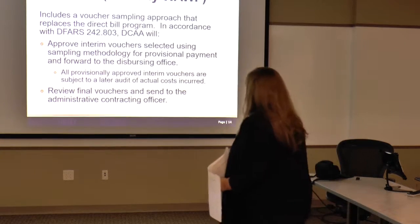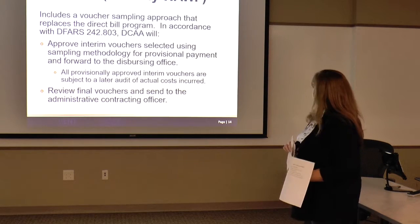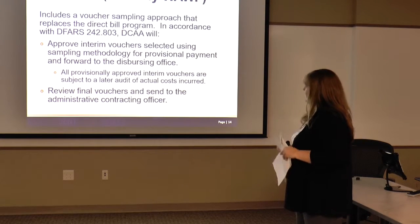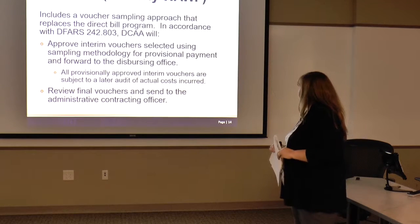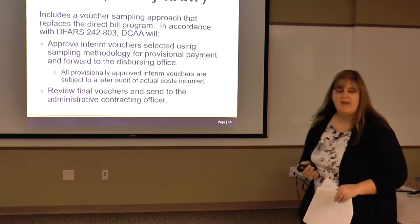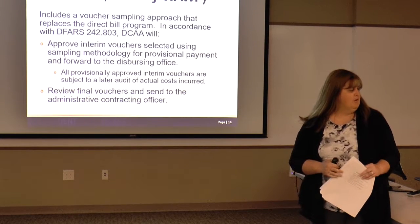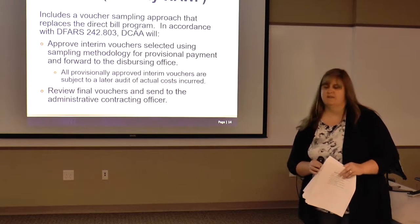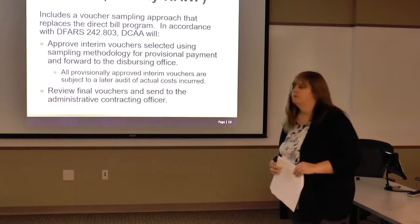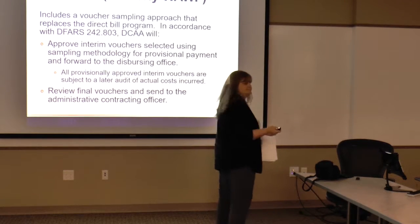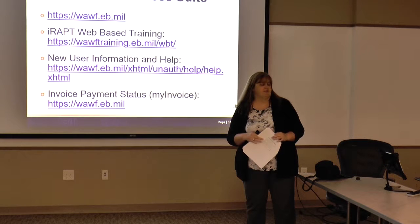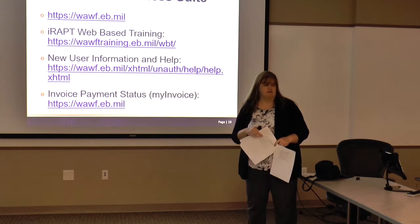DCAA also does voucher sampling, which replaces the direct billing program. We can approve interim vouchers selected using the sampling methodology already discussed. Final vouchers are sent to the ACO once submitted for payment — we're typically about 18 months behind on incurred cost audits on average, so a lot of final vouchers get processed quicker. Also important: we look at all first vouchers — every first voucher that comes across gets sent to us for review, and we do the assessment tool for those as well.